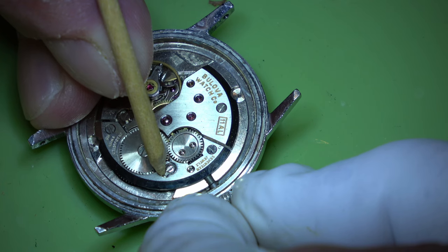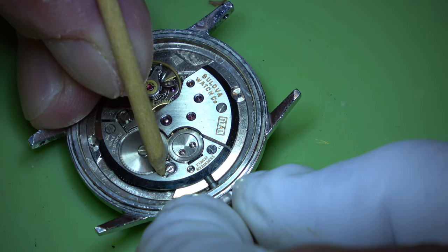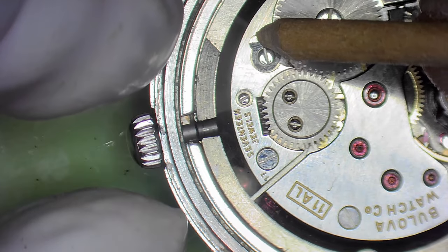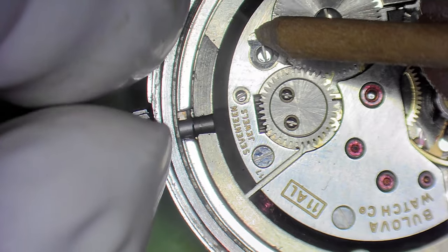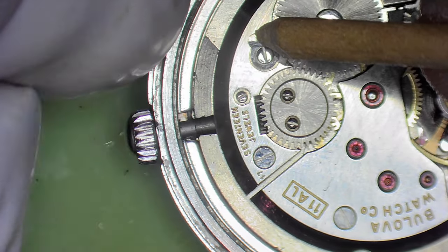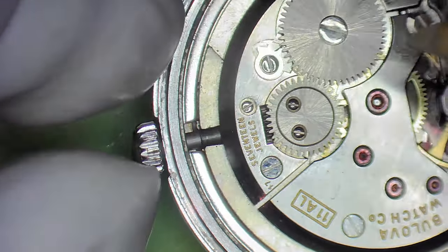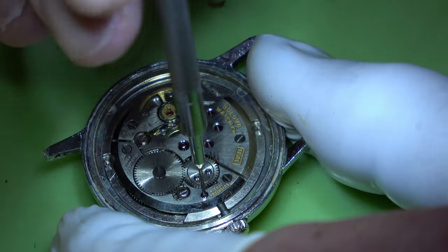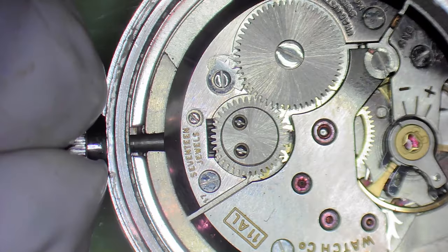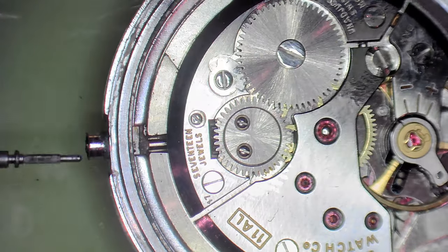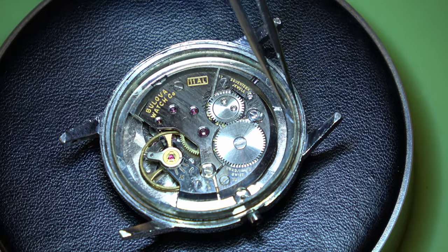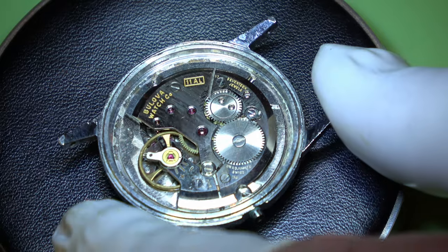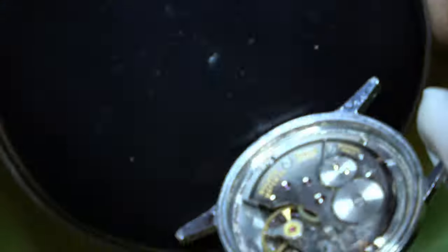Take the power out of the mainspring. What you can see me doing there is I'm just holding that click spring out of the way and then letting it gently unwind. What you don't want to do is let all of the power go all at once. Take out the winding stem.